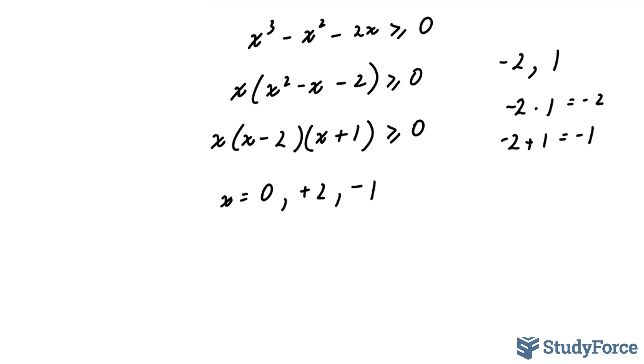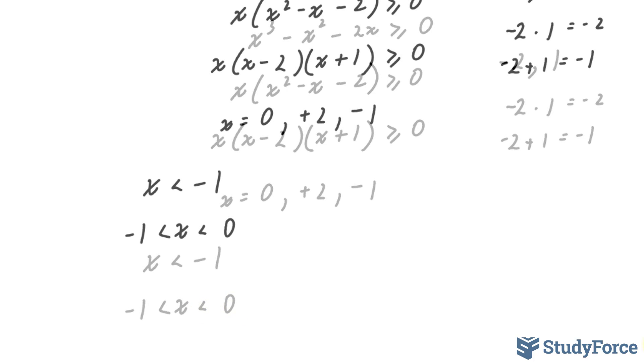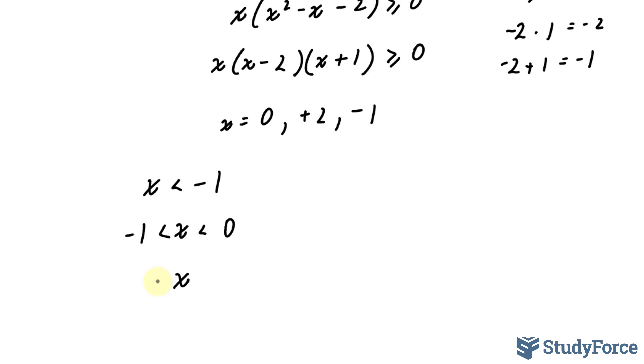So now that we have the critical points, we need to find out what happens before negative 1, in between negative 1 and 0, between 0 and 2, and after 2. So we set up a chart. When x is less than negative 1, when x is between negative 1 and 0, when x is between 0 and positive 2, and when x is greater than 2.